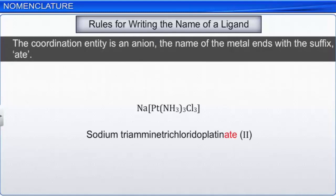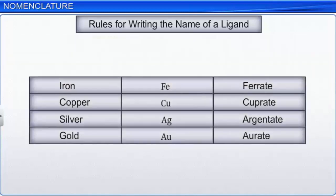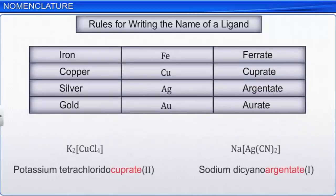For some metals such as iron, copper, silver, and gold, their Latin names are used: ferrate, cuprate, argentate, and aurate. For example, K2[CuCl4] is named potassium tetrachloridocuprate(2), and Na[Ag(CN)2] is named sodium dicyanoargentate(1).